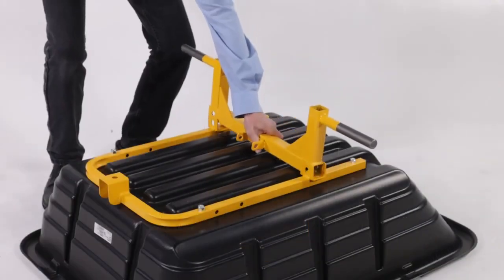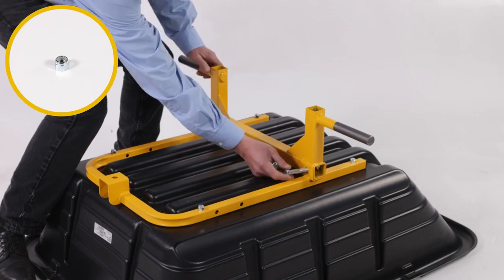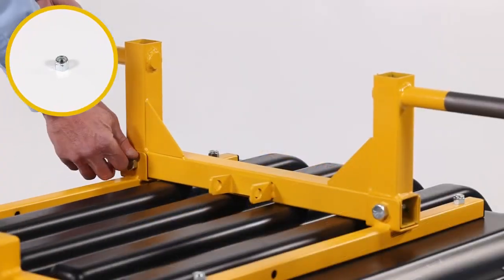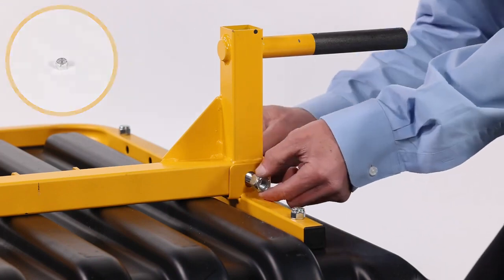Next, align the axle, Part 3, and secure it with 2 1/2 inch by 2 3/4 inch bolts, Part B, and 2 1/2 inch Nylok hex nuts, Part K.